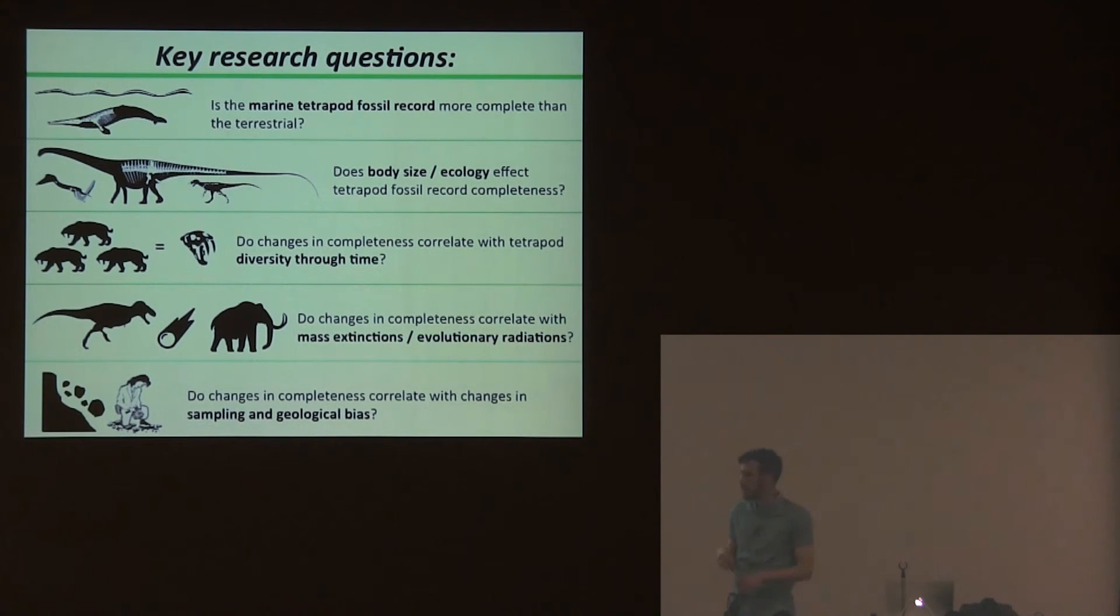I'm also going to consider what controls preservation - is it the animal's body size, their ecology, or the depositional environment? What's interesting is trying to ascertain what level of human bias affects these completeness scores we're getting.